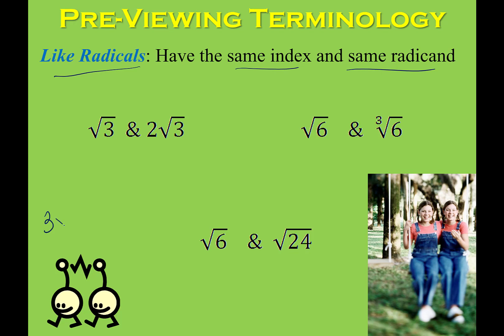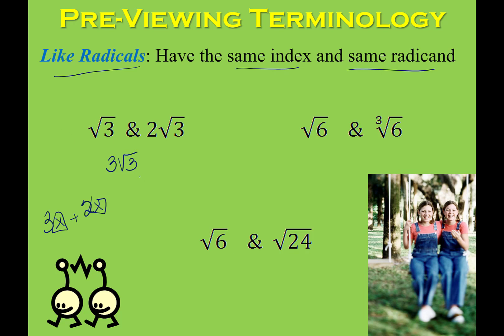Just like we're allowed to add 3x plus 2x and get 5x, I can add 1 square root of 3 and 2 square roots of 3 to get 3 square roots of 3, because they are like radicals — the radicands are identical. Notice that when I added them together the radicand does not change. That's a common misconception, so be careful: just like adding variables gives 5x, not 5x squared. Make sure you have like indexes and like radicands, and that you only add the factors on the outside.